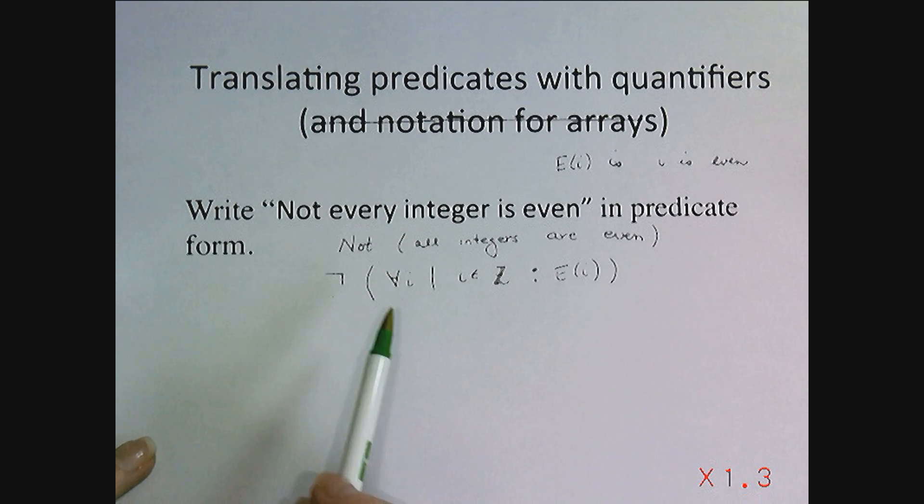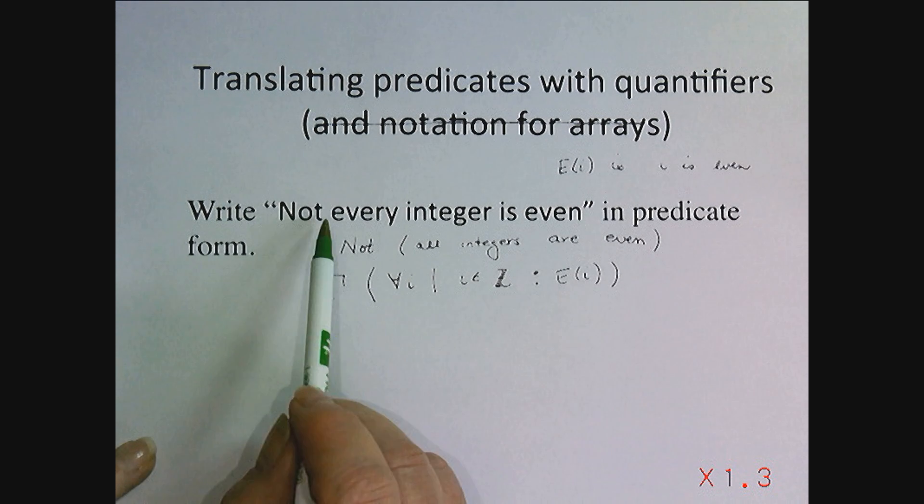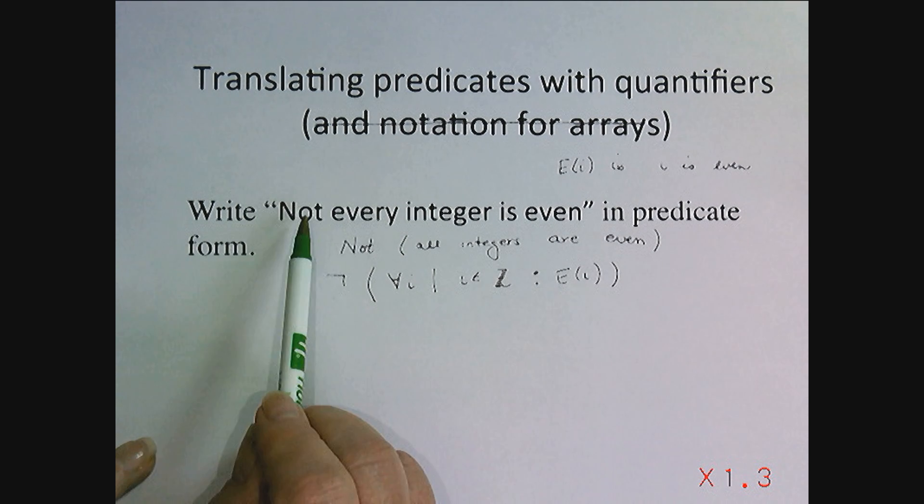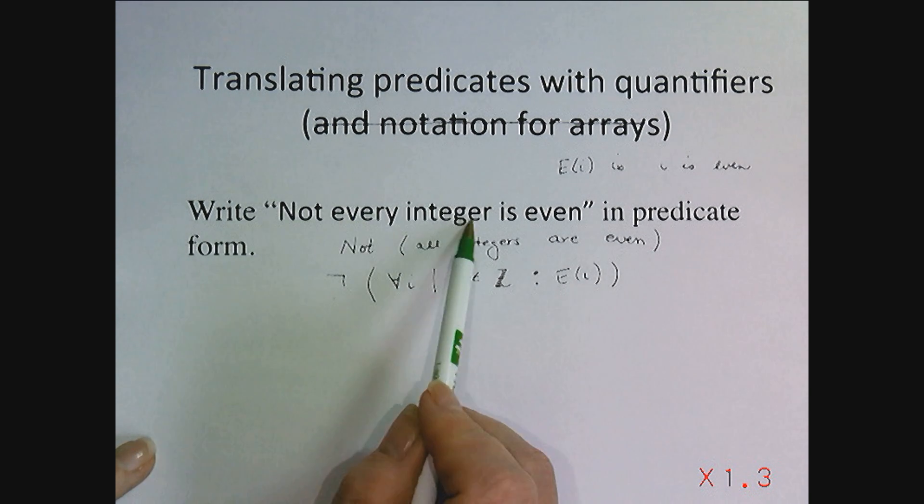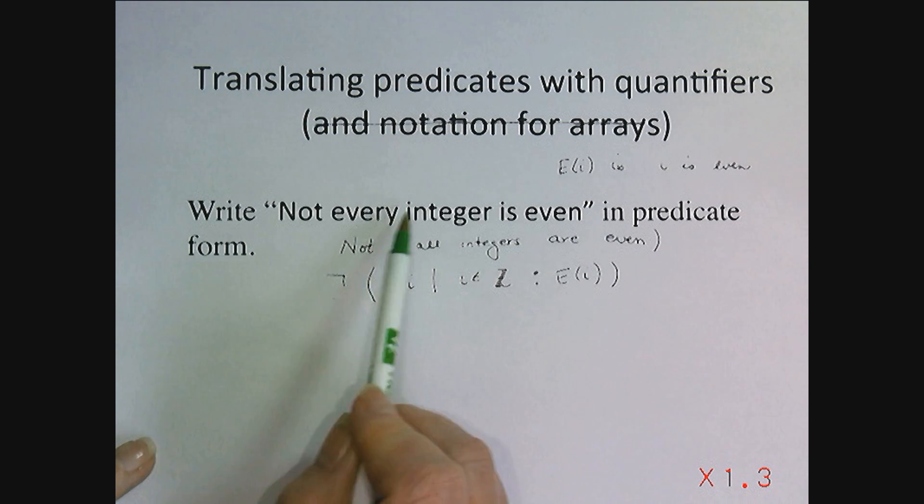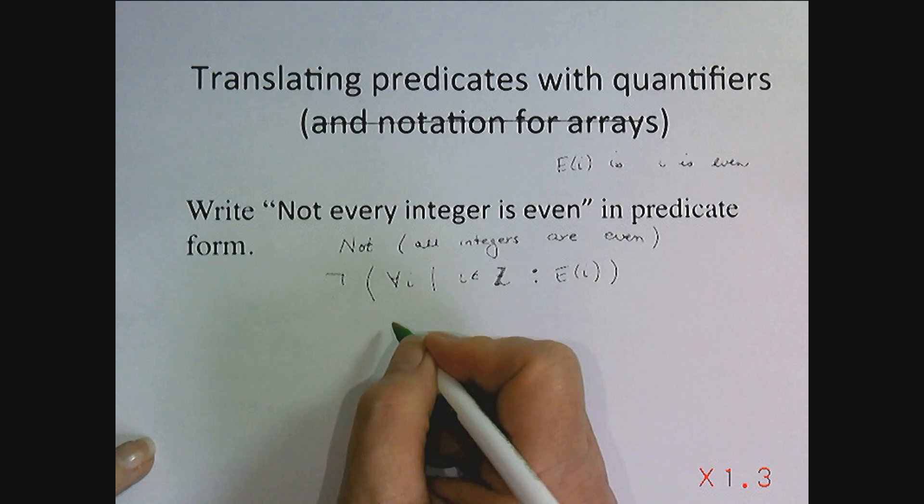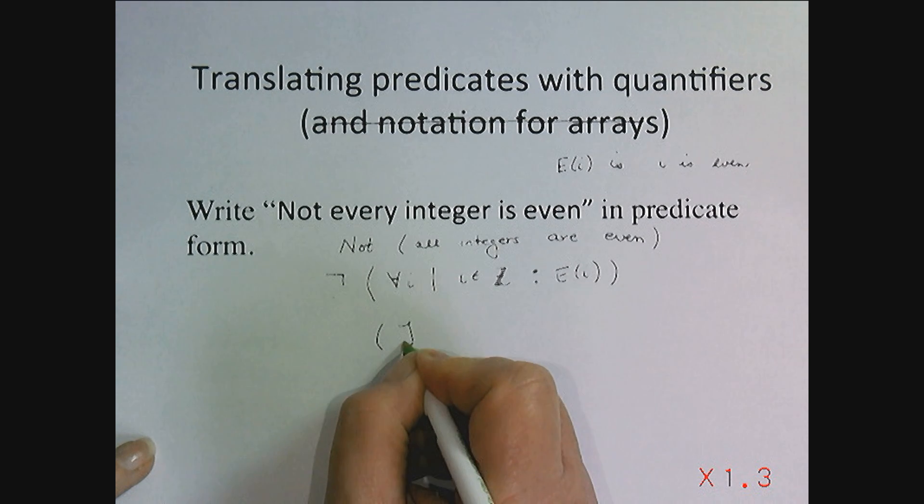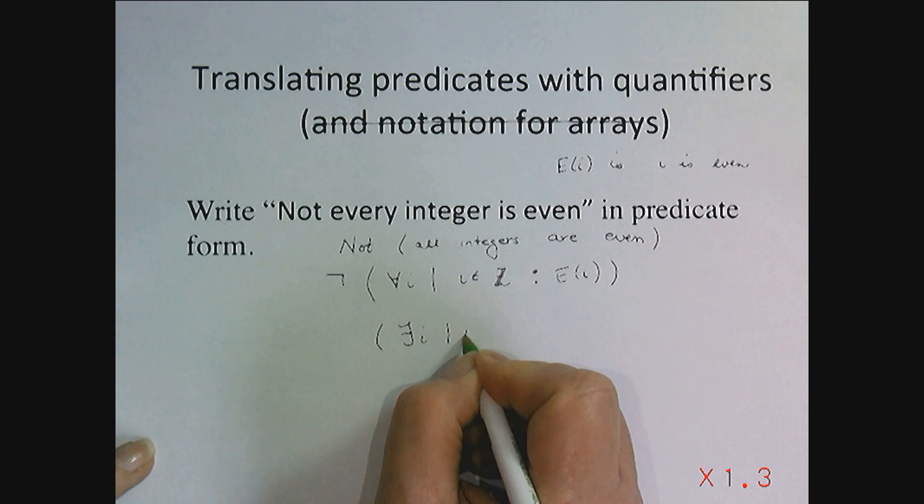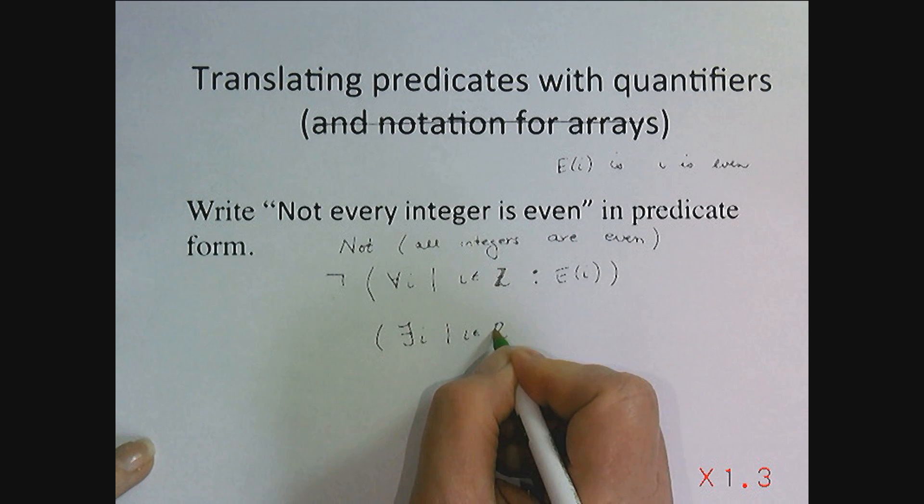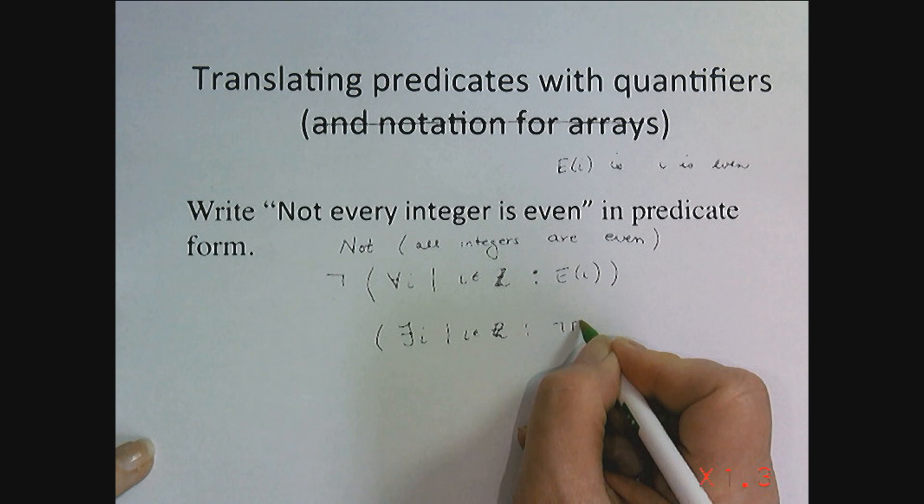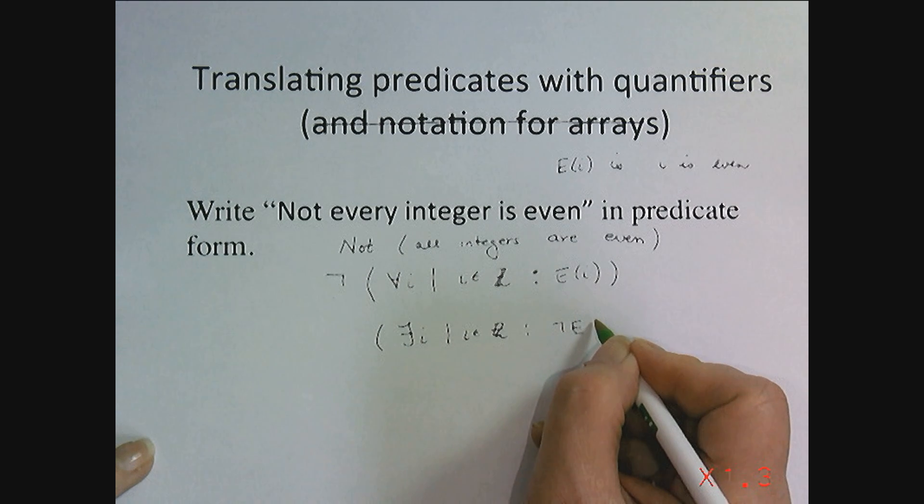But that has nothing to do with existential quantifiers. Wait a minute. Let me think about this again. Not every integer is even. Isn't that the same as there exists an integer that's not even? So shouldn't I write this as there exists an i, i an integer, where it's not the case that it's even?